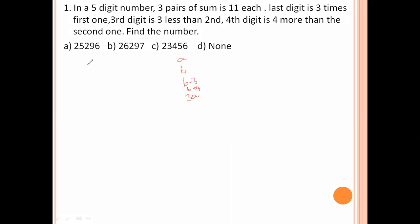Checking through the options one by one: if A is 2, the last digit is 6. Suppose B is 5 — the third digit is B minus 3 equals 2, and the fourth digit is B plus 4 equals 9. Checking the sums: 9 plus 2 is 11, 5 plus 6 is 11, and 2 plus 9 is 11, with 3 plus 5 also giving a match. So option number A is the right answer.